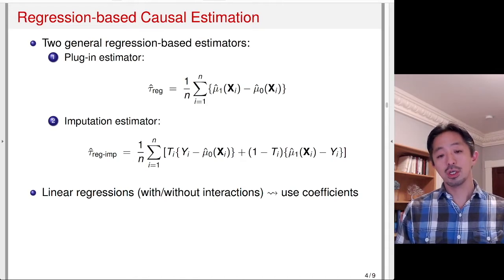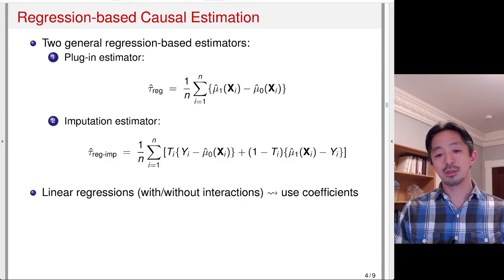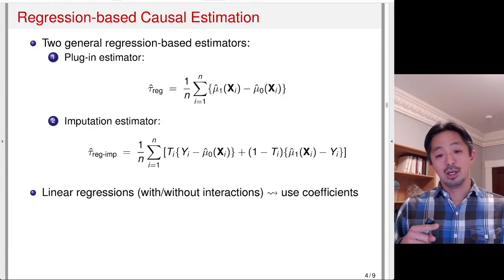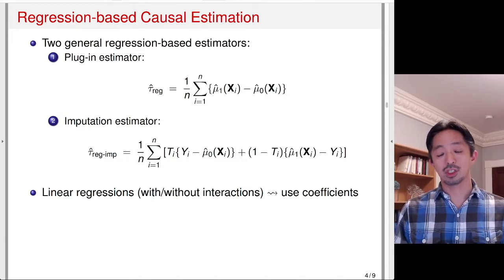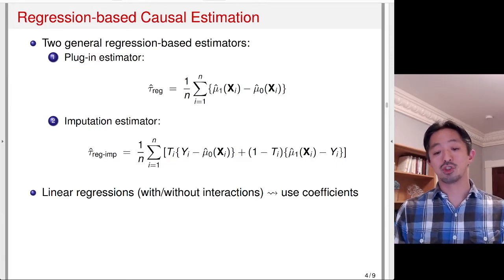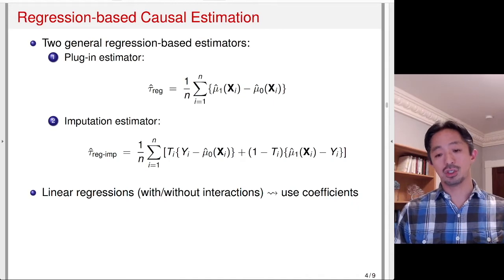In the case of linear regression, you don't have to compute these for each observation — you can just look at the coefficients. The plug-in estimator corresponds to a linear regression without any interaction between treatment and covariates — the coefficient for the treatment variable gives you the estimate directly. The imputation estimator is numerically equivalent to the coefficient for the interaction between treatment and the covariate in a linear model with that interaction term. So linear regression is convenient because you can simply read off the coefficient.